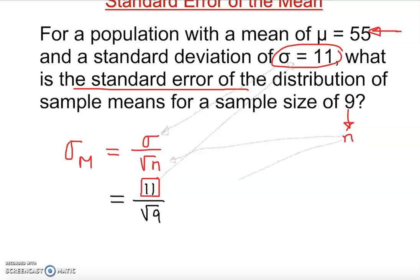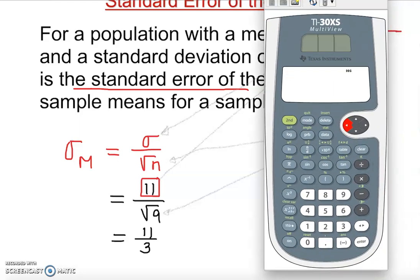All we do is use our calculator or simplify it. Any basic calculator will work. I'll show you here: 11 divided by 3, enter. You see it's still a fraction, 3.67 approximately. Or you can do 11 divided by 3, which gives you the same result.